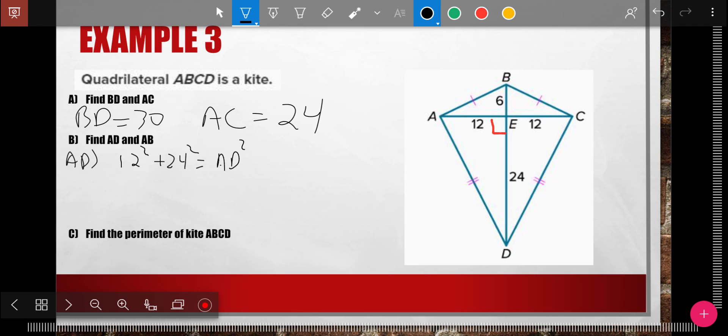I don't know what C is. That's 144 plus 576 equals AD squared, which is 720 equals AD. To get AD by itself, if it's squared, I need to put in a square root.